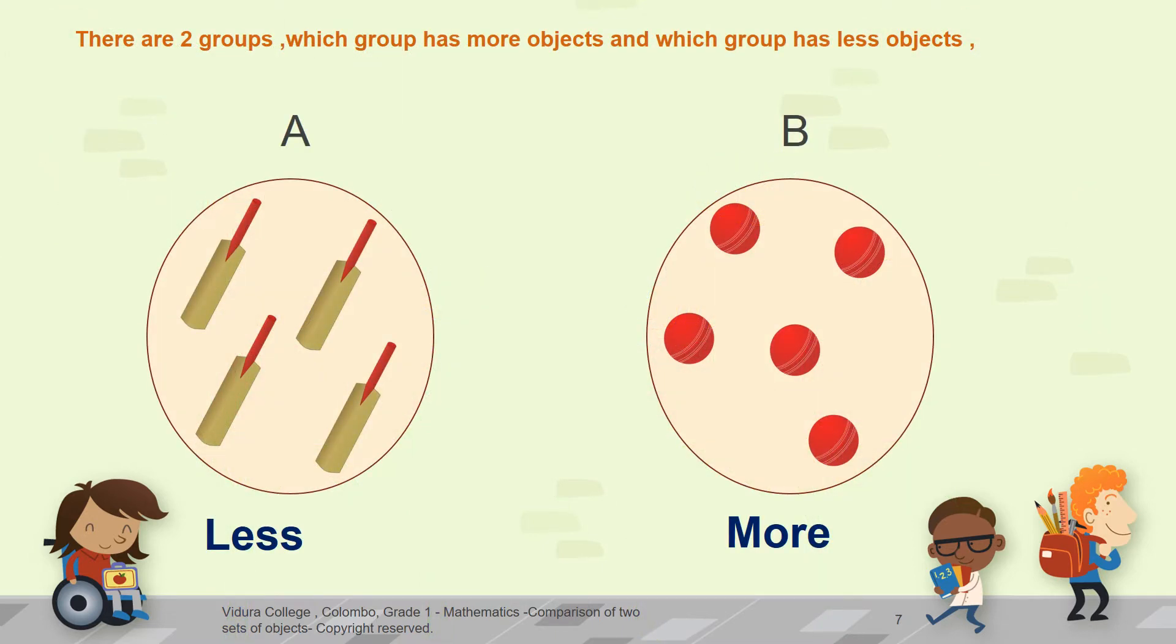Next up, we have an activity to do. There are two groups. Which group has more objects and which group has less objects? We have done this type of activity at the beginning. So, I hope it's so easy. Let's match the balls and bats together.